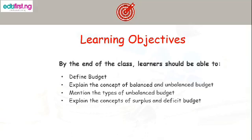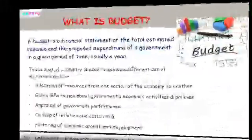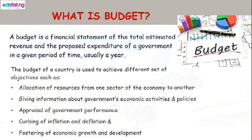What is a budget? A budget is a financial statement of total estimated revenue and proposed expenditure of a government in a given period of time, usually a year. The budget of a country is used to achieve different sets of objectives such as: one, allocation of resources from one sector of the economy to another; two, giving information about government's economic activities and policies.